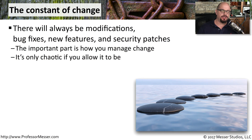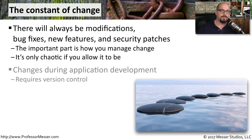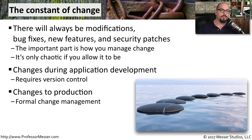There are always going to be changes to an application — it's guaranteed, because people will want new features added, someone may identify a security problem, or you may need to integrate bug fixes into existing code. During the application development process, there are an extensive number of changes made to the code, and you need some way to provide version control. There are also changes that occur when you're ready to move the application into a production environment, and this formal change management process becomes very important to maintain the uptime and availability of your applications.